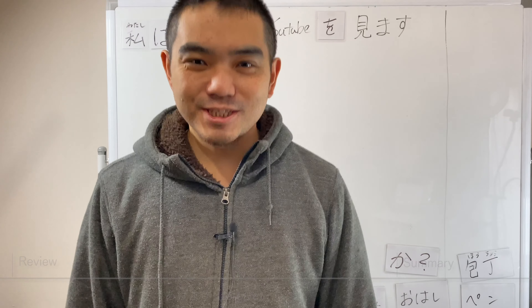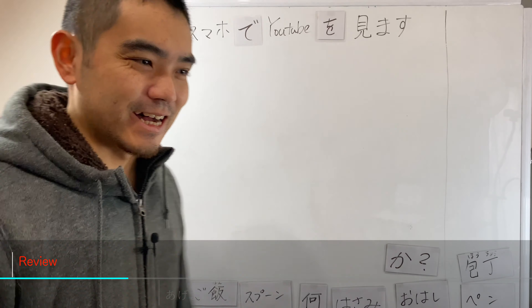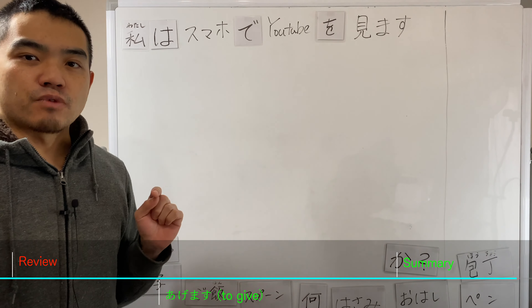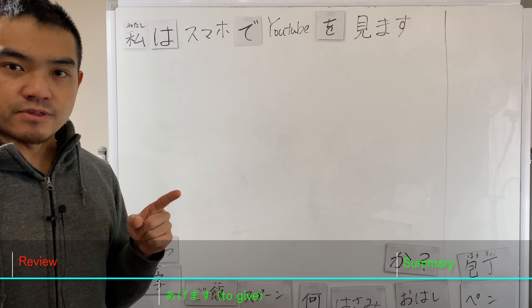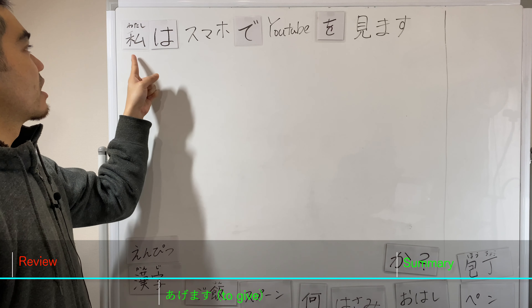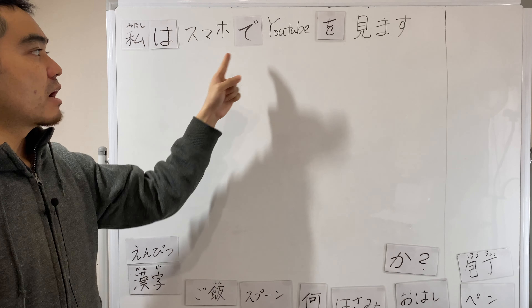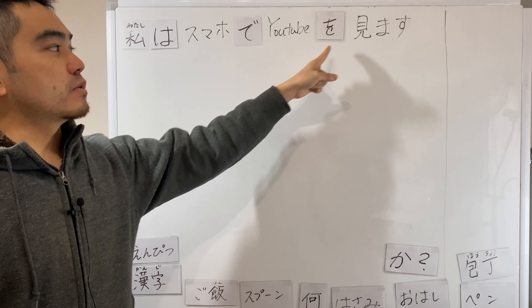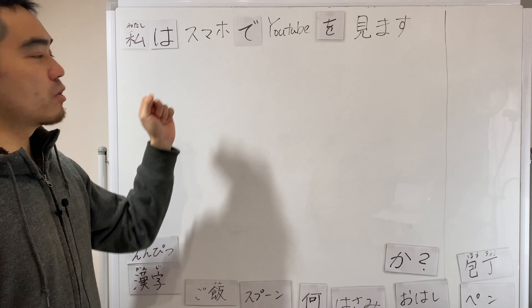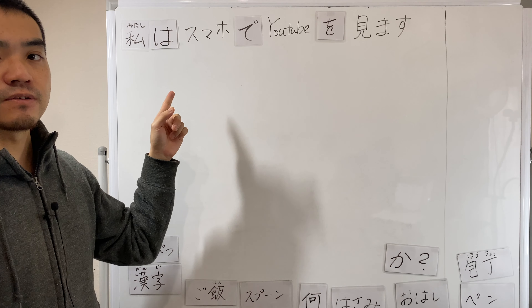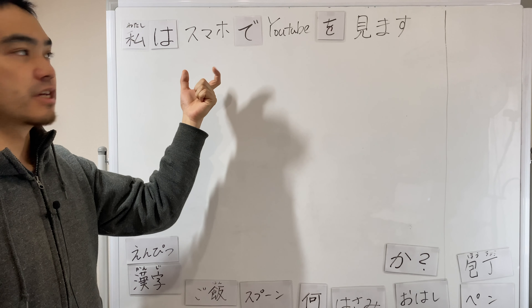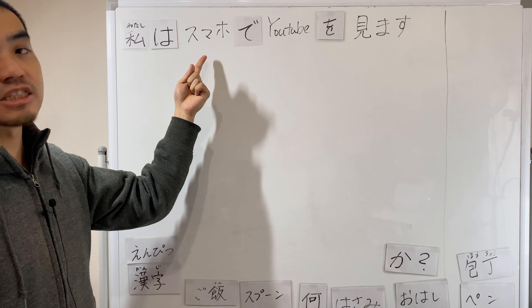スマホでYouTubeを見ます。みなさん、こんにちは。お元気ですか? Let's review what we've learned the previous session. わたしはスマホでYouTubeを見ます。スマホ — スマートフォン. We shorten the word like this.